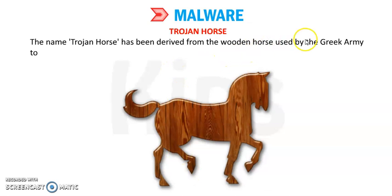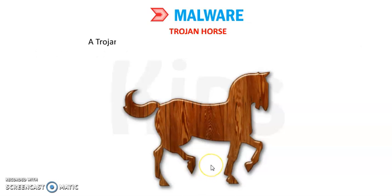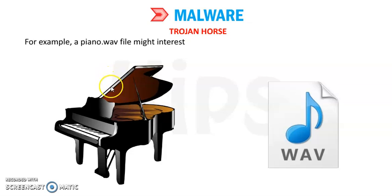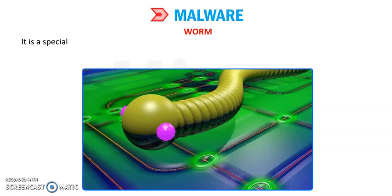The name Trojan Horse has been derived from the wooden horse used by the Greek army to conquer the city of Troy. A Trojan Horse is usually masked to make it look interesting — for example, a piano.wav file might interest a person collecting sound samples of instruments. It pretends by name or appearance to do one thing while actually doing something totally different and often damaging to your data. These are non-self-replicating, unlike viruses. A Trojan Horse can only spread by a user copying or storing it on other computers.